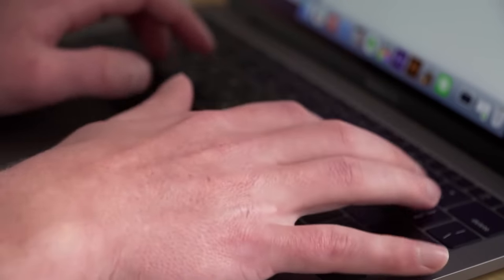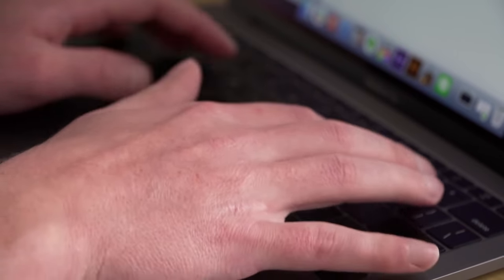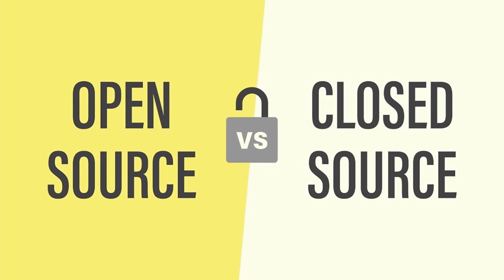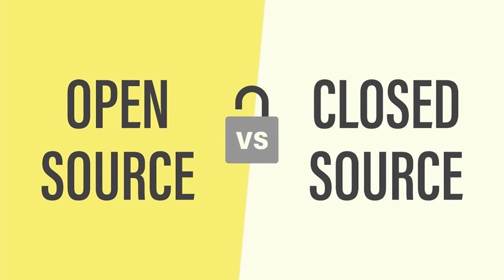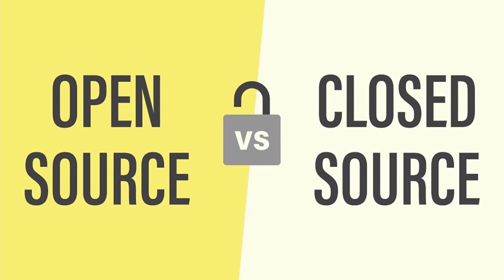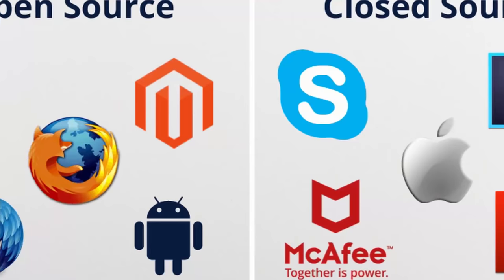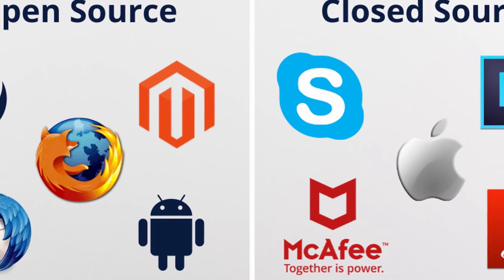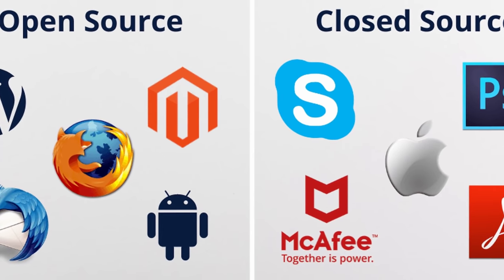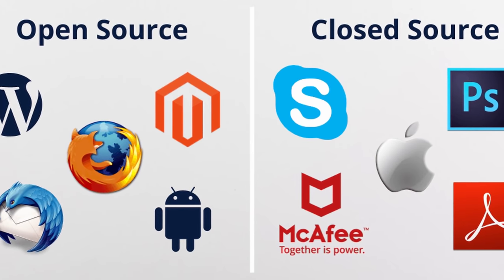Before we get started, all of these suggestions are my own opinion, and we're going to be mostly talking about computer applications, though this could be repurposed for mobile devices as well. I would recommend using open source programs over closed source ones. Open source means the program itself is publicly accessible — if you have the skills, you can access the source code and use or edit it to fix bugs or even make something new.